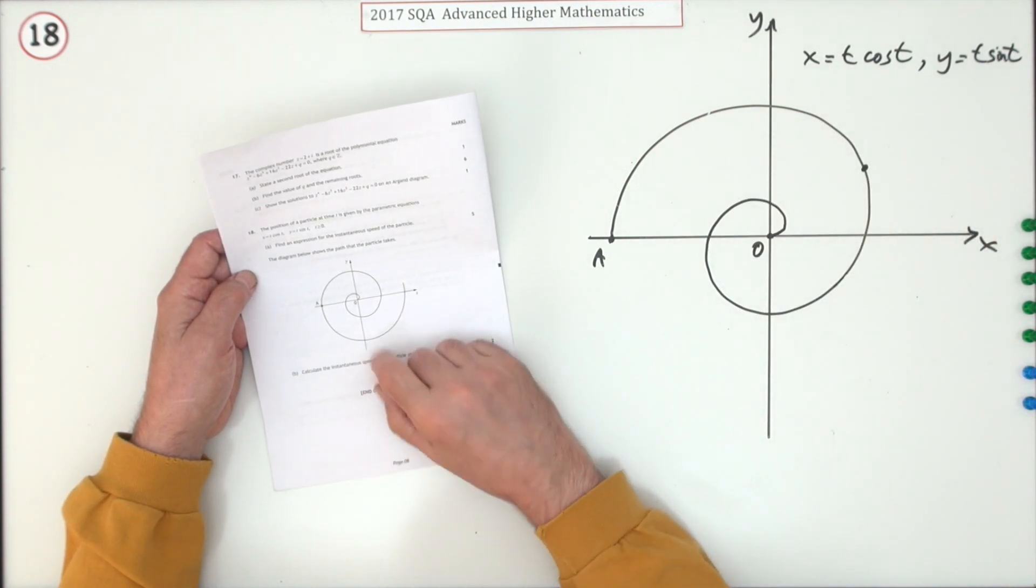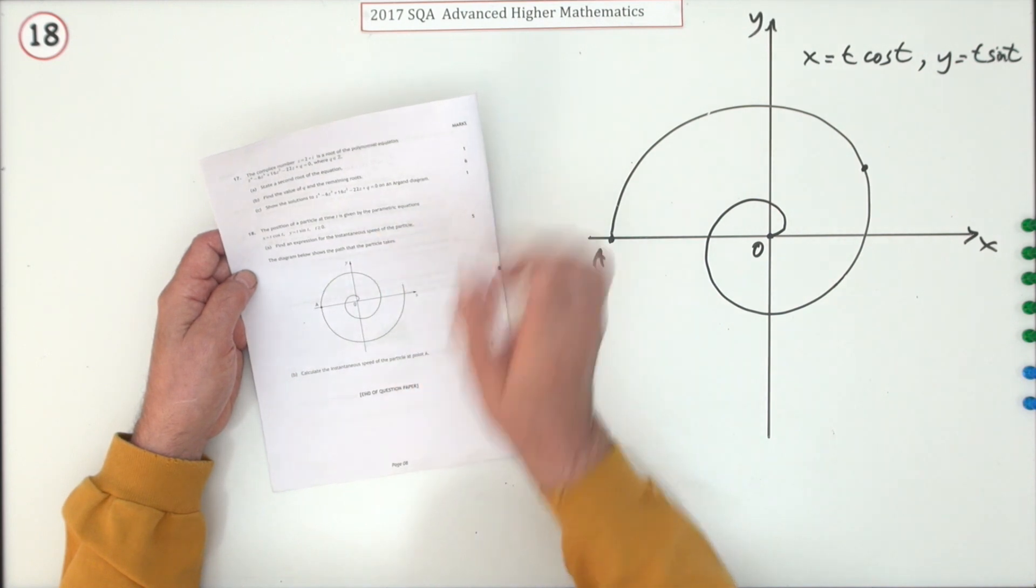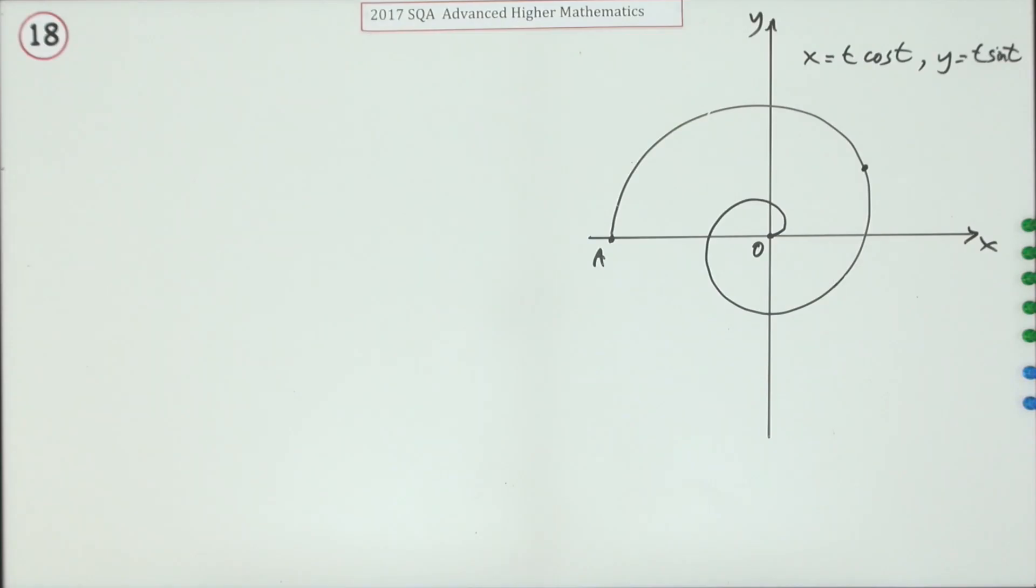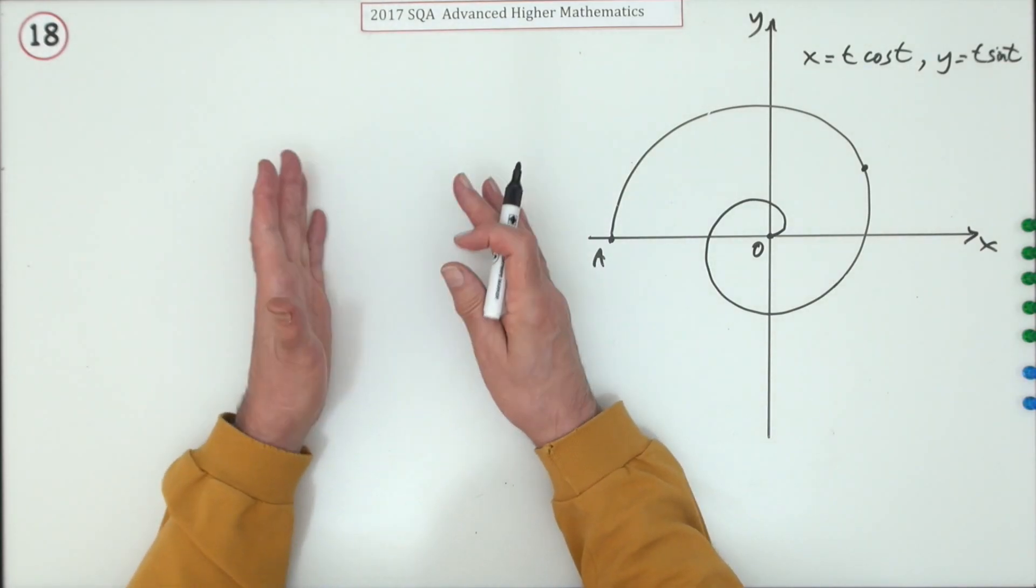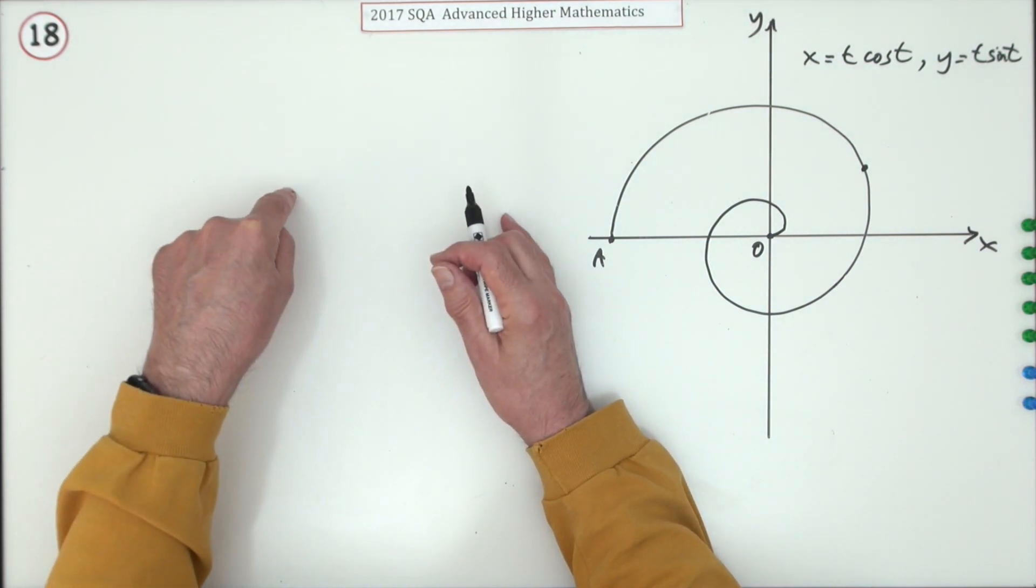It just wants, for five marks, an expression for the instantaneous speed of the particle. Now that's in the course. In the Higher, you had the relationship between distance, speed, which was rate of change of distance, and acceleration, which was rate of change of speed.